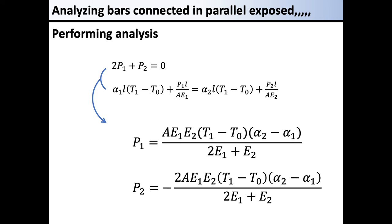In this problem, we have a condition that α1 is larger than α2. Now, we get P1 as positive and P2 as negative. So, at this stage, the calculation results show that the center bar is in compression and the bars of both sides are in tension. You may notice that the condition is satisfied.